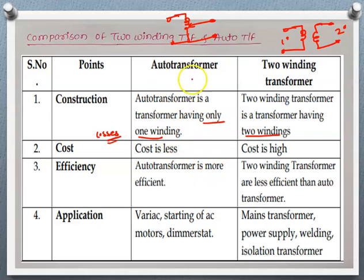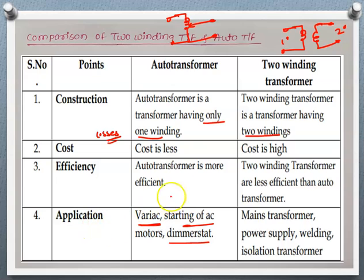This lack of electrical isolation is a drawback of the autotransformer. It is used as a variac (to vary supply voltage), for starting AC motors, and as a dimmer to change the brightness or intensity of lamps. The two-winding transformer has major applications as a mains transformer, power supply, welding transformer, and isolation transformer. These are the key differences between the autotransformer and the two-winding transformer.